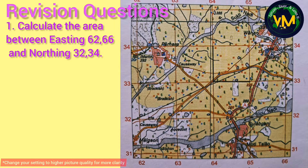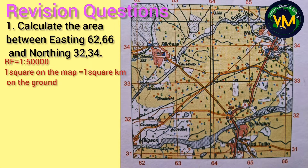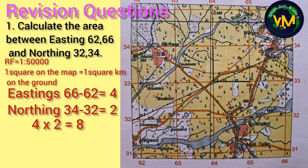Let us do some revision questions. First question: calculate the area between easting 62-66 and northing 32-34. Step 1: write the statement — RF equal to 1 is to 50,000, 1 square on the map equals 1 square kilometer on the ground. Step 2: find the difference — 66 minus 62 equals 4, and 34 minus 32 equals 2. Step 3: multiply — 4 into 2 equals 8. So there are 8 squares total. The answer is 8 square kilometer. If you forget to write the unit you will get zero marks.